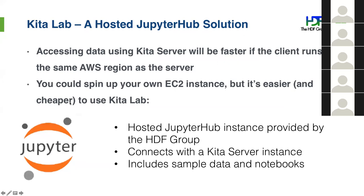Kita Lab enables you to connect to a cloud environment so that rather than connecting from your desktop, which may be very far away from where the server is, you're running a Python environment within the same Amazon AWS region as the data server and the S3 storage objects. You get very fast access. For example, if you're doing analytics over a very large dataset, rather than moving the bulk of the data from Amazon to your desktop, it's all happening within the Amazon data center — data flows from S3 storage through the data server to a container running your Jupyter environment.